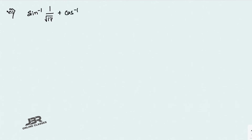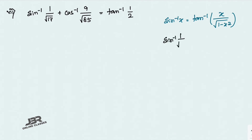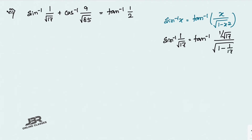Sum number 7: sin⁻¹(1/√17) + cos⁻¹(9/√85) = tan⁻¹(1/2). We first convert sin⁻¹ to tan⁻¹ using: sin⁻¹(x) = tan⁻¹(x/√(1−x²)). Applying to sin⁻¹(1/√17): tan⁻¹ of (1/√17) divided by √(1 − 1/17).